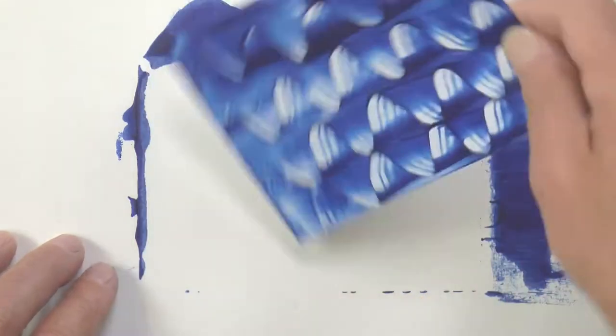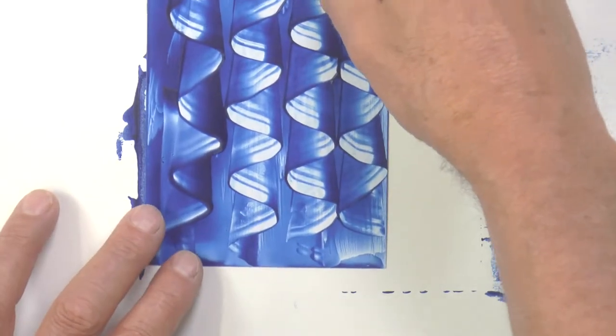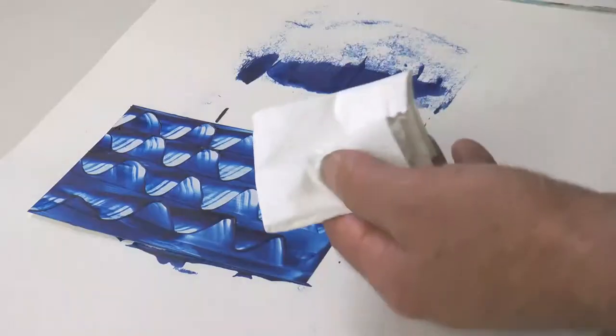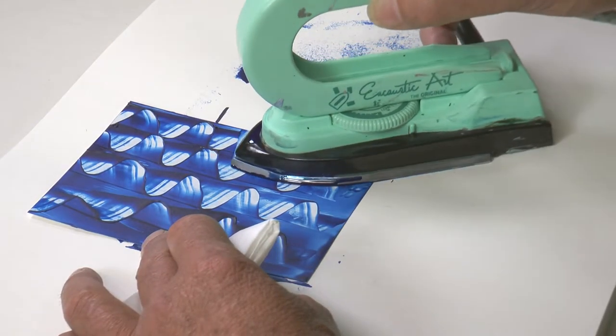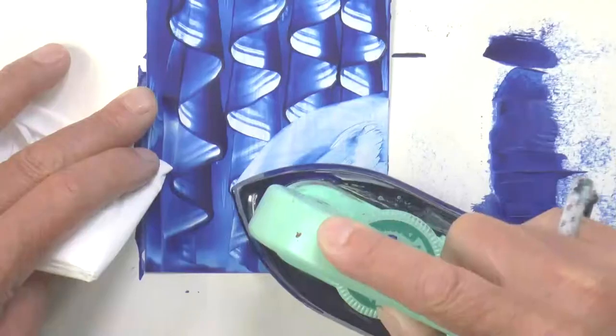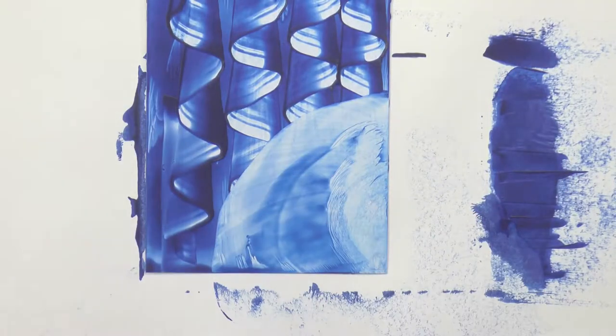Now I want to put a place for the urchin. So I'm going to turn the card, make it easy for myself. Got a tissue ready. And I'm just going to describe some sort of arc. Something like that.